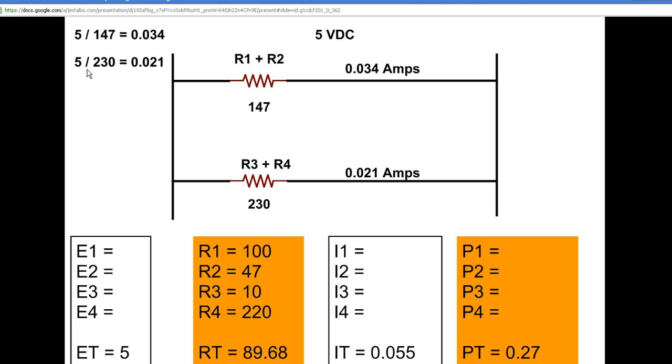We do the same thing, 5 divided by 230 because voltage is the same in parallel, and we have our 0.021 amps. This is the same as 34 milliamps and 21 milliamps. If we add these together, 34 milliamps plus 21 equals 55 milliamps, or 0.055 amps. So it works out. It's the same as E over R equals I, we get the same answer. So we know we've calculated our branch currents correctly.